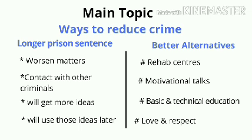Now let's start jotting down points for both of these columns. Let's take longer prison sentence first. What we have to do is think about one point and then start expanding on that. So let's say I think of one point, which is that longer prison sentences may actually worsen the situation. Instead of improving the person, it may just make him even worse and even a more dangerous criminal.